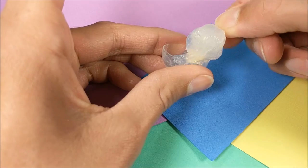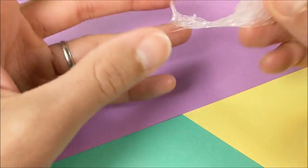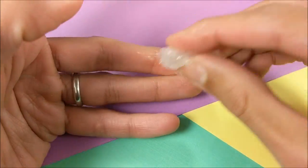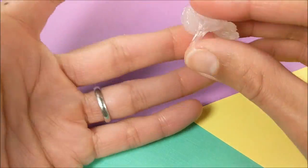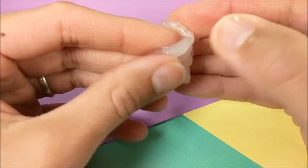And I like using Elmer's clear glue because my slime is a little more see-through. And as you massage it, it'll get smoother.